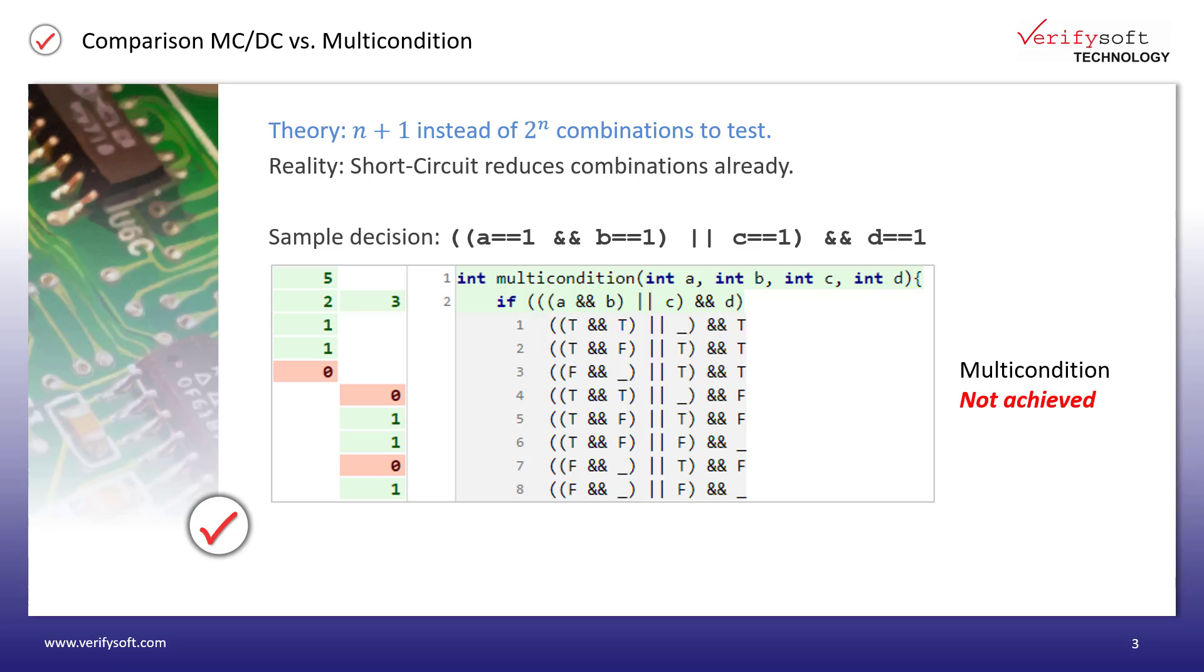Here you can see an excerpt from a coverage report created with our tool TestWell CTC++. In the second line, we see a shortened version of our code example, a decision consisting of 4 conditions. Below with a grey background, we see 8 rows of a truth table that was calculated by our tool and shows all possible combinations to achieve multi-condition coverage.